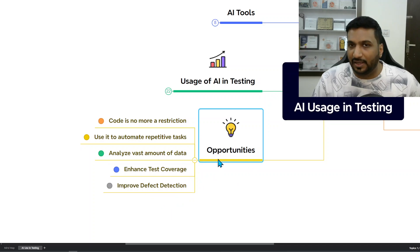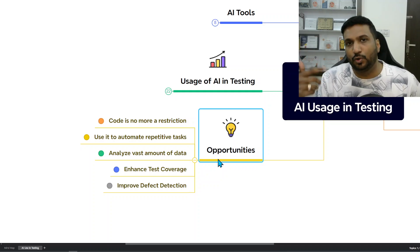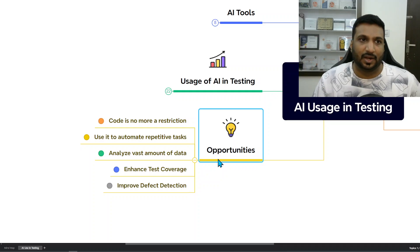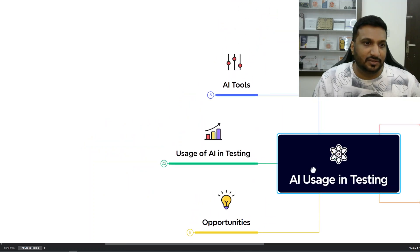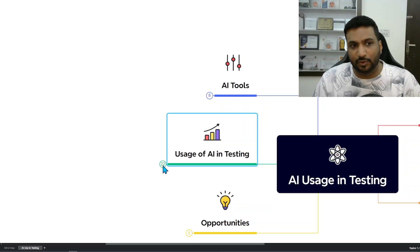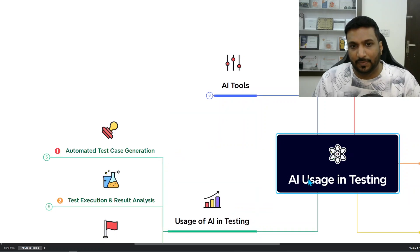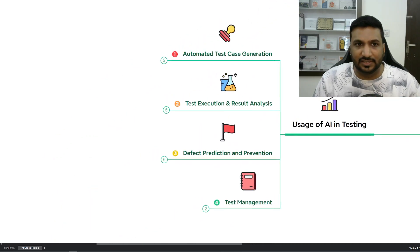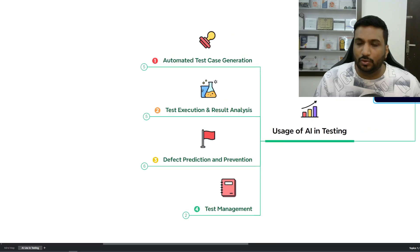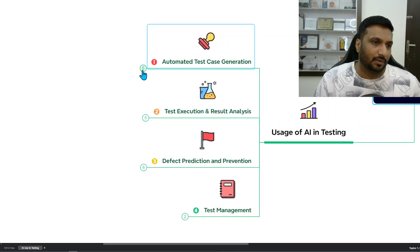AI can also help improve defect detection by analyzing data and patterns. There are even tools coming into the market along these lines, which I'll talk about in the last section of this mind map. The core aspect of the webinar was usage of AI in testing — four key use cases at a high level, each with multiple sub-points.